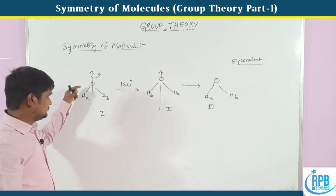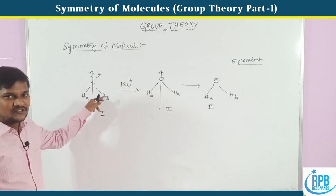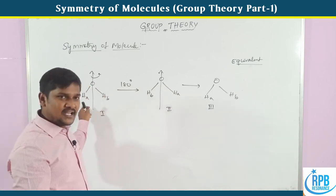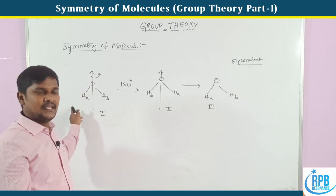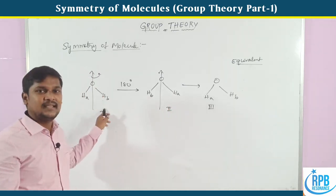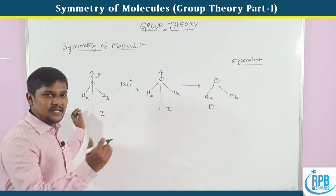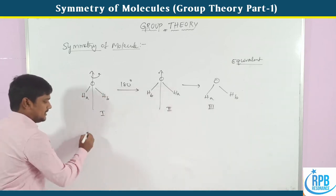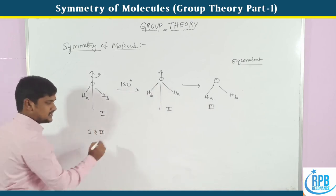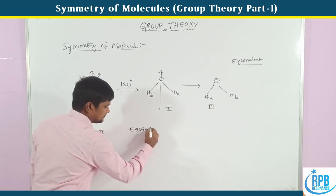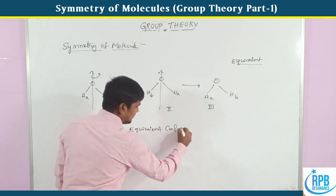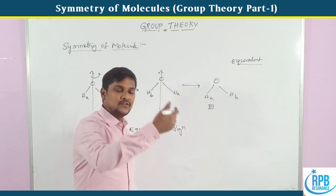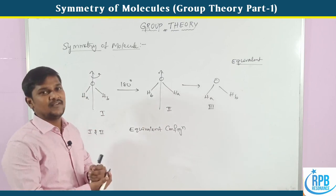So among these three configurations, what is the relation between 1 and 2, 2 and 3, and 1 and 3? In configuration 1 we have oxygen, HA, HB. After rotation, HA replaces HB and HB replaces HA - that gives a new configuration. Configurations 1 and 2, and configurations 2 and 3, share this kind of relation - similar atoms replace those similar atoms - and these are called equivalent configurations.